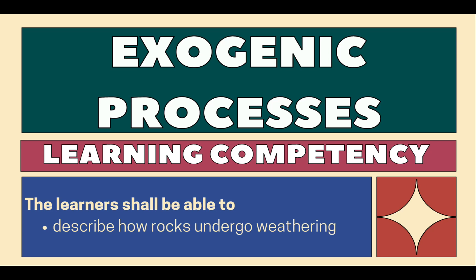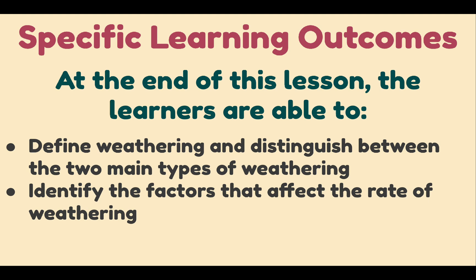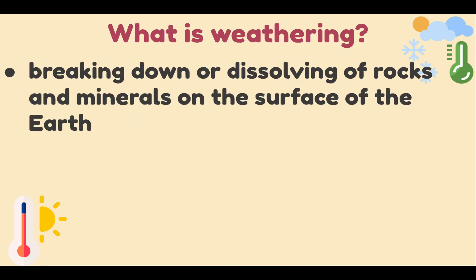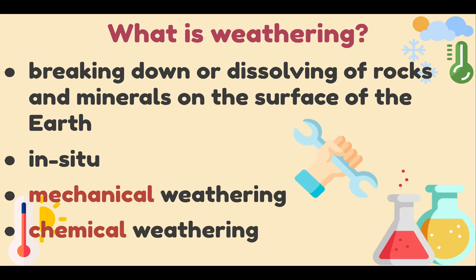In this video, we are going to talk about the different exogenic processes. The learning competency is to describe how rocks undergo weathering. When asked what weathering is, some will think of the changes in the weather, but this is not exactly what weathering is. However, weather is part of the agents of weathering. Weathering describes the breaking down or dissolving of rocks and minerals on the surface of the earth, and weathering happens in situ — it means it happens in place. There are two kinds of weathering: mechanical weathering and chemical weathering.